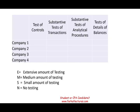We'll work through four hypothetical company examples to illustrate the evidence mix. E means extensive testing, M means medium, S means small, and N means no testing using that method.